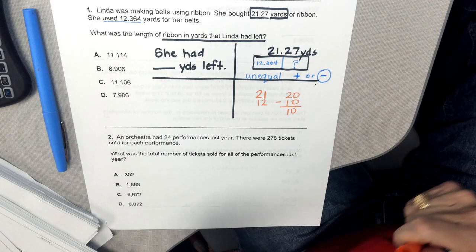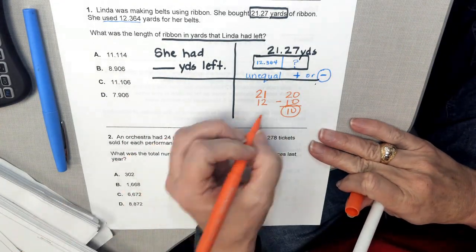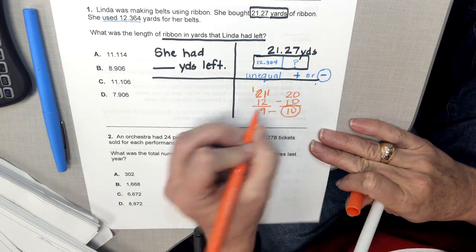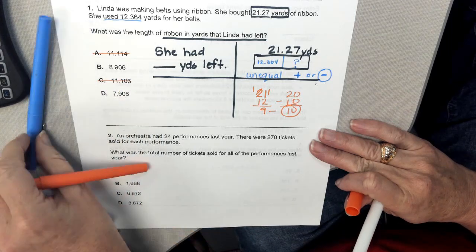All right, so our quick estimate tells me that this answer is right around 10 or even less than that. So that means that I should get rid of this answer choice and this answer choice because those are pretty high.